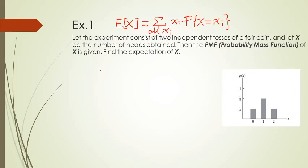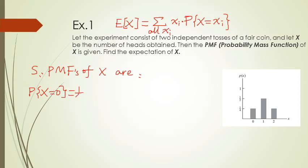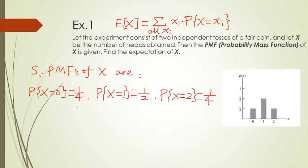Let's work through Example 1 — the same example we discussed in section 2. The PMF of X is: when the random variable equals 0, the probability is 1/4; when it equals 1, the probability is 1/2; and when it equals 2, the probability is 1/4. Of course, the sum of all PMF values equals 1: 1/4 + 1/2 + 1/4 = 1.